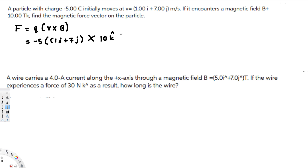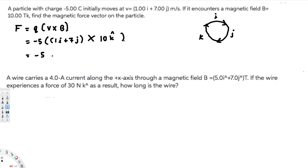Let's do the crossing and see what we get. We're going to use the cross product pattern with i, j, and k. First, i cross k: i cross k gives the opposite side, which is negative j. So i cross k gives us negative j, meaning the i component contributes negative 10j.